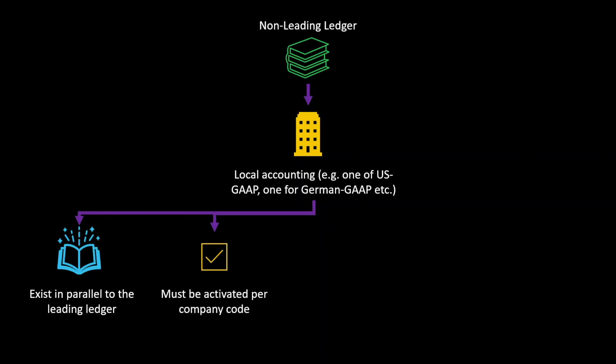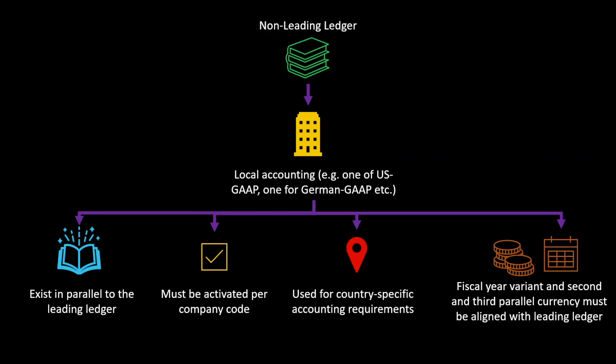A non-leading ledger must be activated per company code, so it is not automatically assigned to all of our company codes. Non-leading ledgers are used to reflect country-specific accounting requirements. And one of the prerequisites is also that the fiscal year variant and the second and third parallel currency must be aligned with the leading ledger — so they can't deviate.